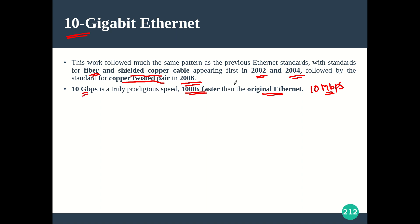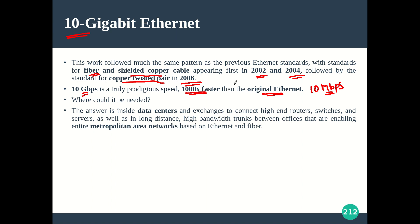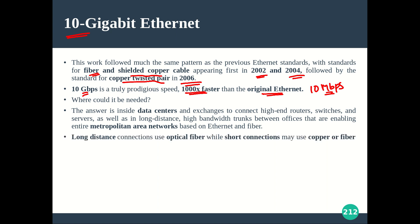Where is 10 Gigabit Ethernet actually needed? It is needed inside data centers to connect high-end routers, switches, and servers, as well as in long-distance, high-bandwidth trunks between offices, enabling metropolitan area network-based Ethernet over fiber. For long-distance connections, optical fiber is typically used, while for short-distance connections, either copper or fiber variations of 10 Gigabit Ethernet can be used.